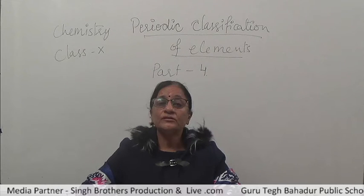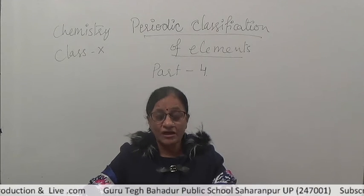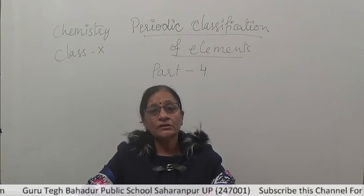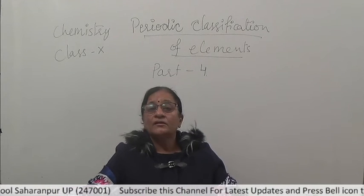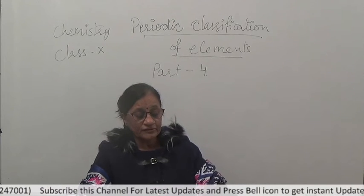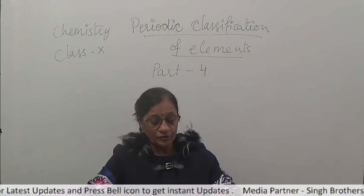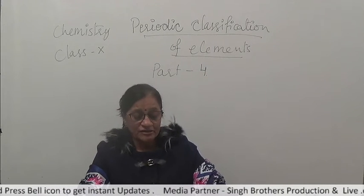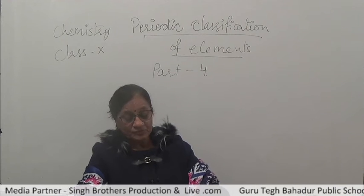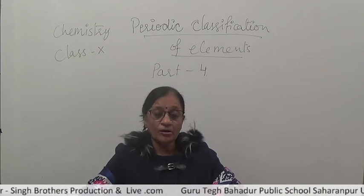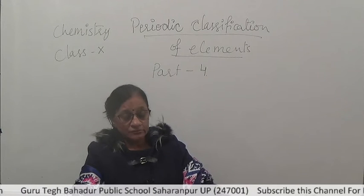Good morning students. In continuation of the chapter on periodic classification of elements, in the last session we discussed the merits and demerits of Mendeleev's periodic table. We found that Mendeleev was the first to do much work in forming the periodic table. When he proposed his periodic table in 1871, the concept of atomic number and electronic configuration was not yet known, so he could not consider those.